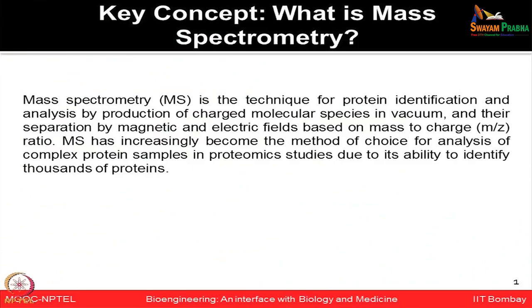Today we are mainly going to talk about mass spectrometry—the basics of it as well as mass spectrometry-based proteomics. Mass spectrometry is a technique for protein identification and analysis by producing charged molecular species in vacuum and then separating them by magnetic and electric fields based on the mass-to-charge ratio. This technology has become increasingly used in the proteomics field and is now a method of choice for analyzing complex protein samples.